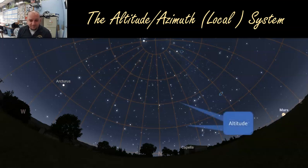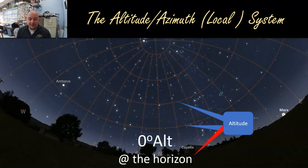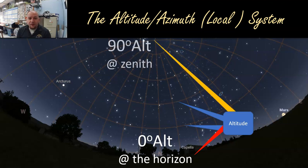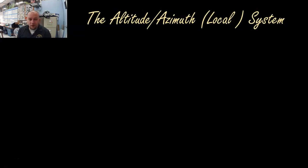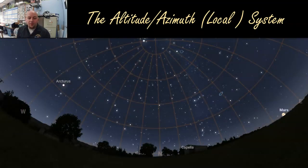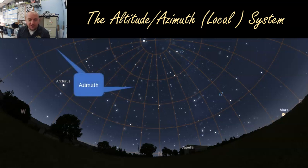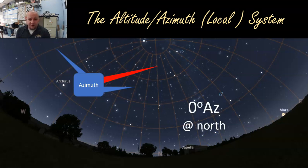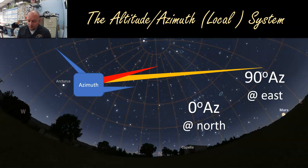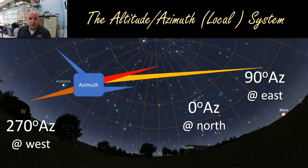Altitude is a measure of how high an object is from the horizon towards the top of the sky. The altitude of the horizon itself is zero degrees, and the altitude of the zenith is 90 degrees, with everything else somewhere in between. The second coordinate is azimuth — a measure of where you are around the circle. We pick an arbitrary zero line; the zero azimuth line goes from due north right up to zenith. Moving east gives an azimuth of 90 degrees, south is 180, west is 270, and back to zero or 360 in the north.